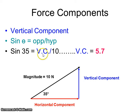So when you go through and you calculate the vertical side, you multiply both sides by 10, you should get 5.7. So that means the vertical component is 5.7. So when I exert a force of 10 newtons at an angle of 35 degrees, I'm trying to lift it with 5.7 newtons. That's what that tells me.